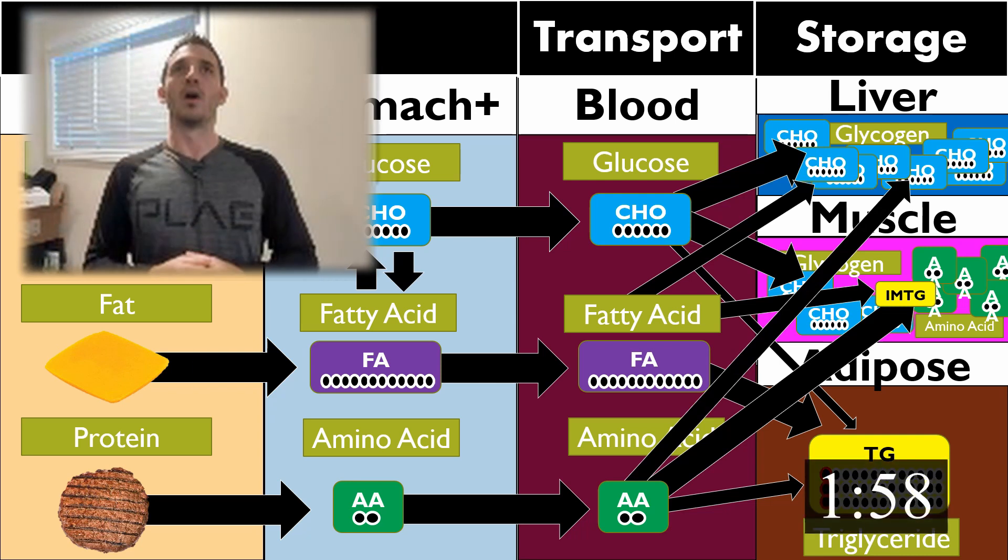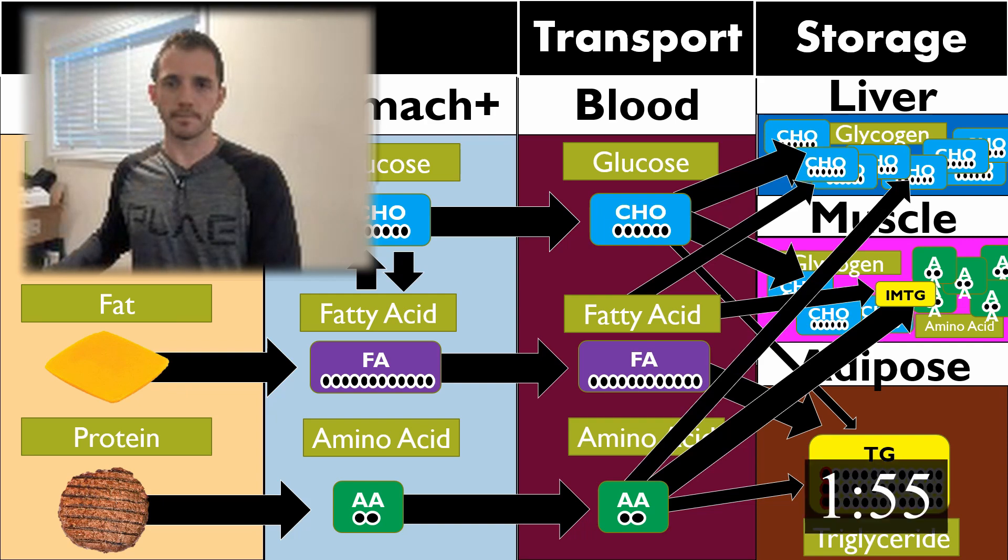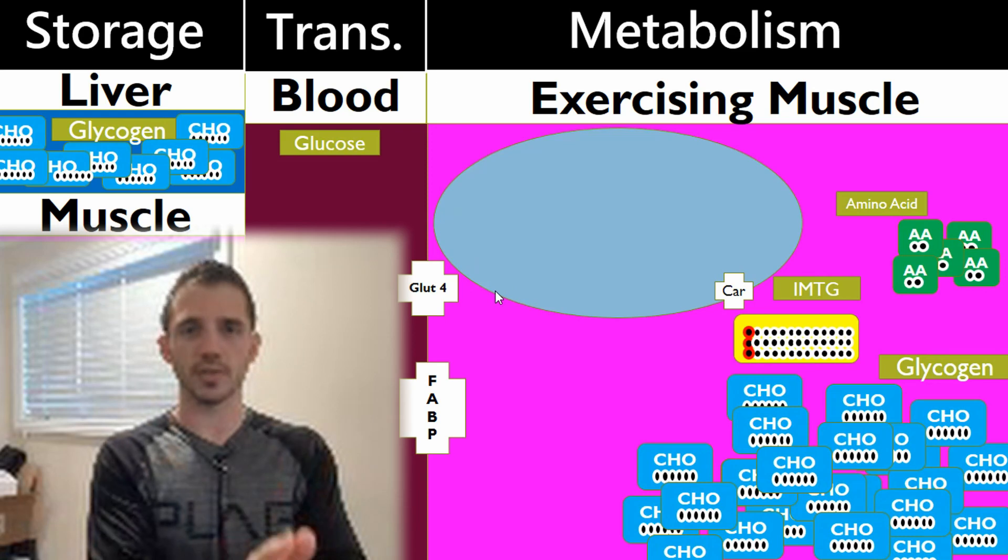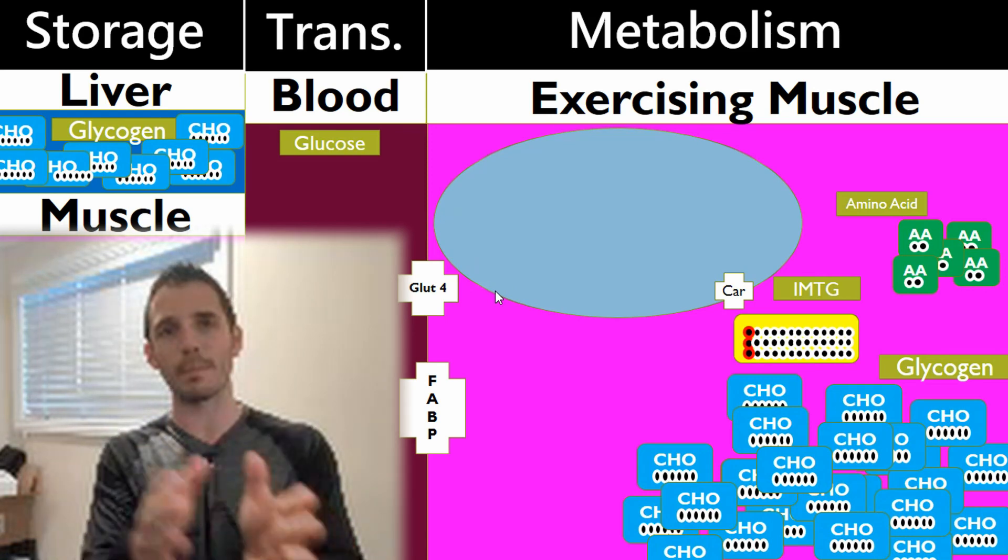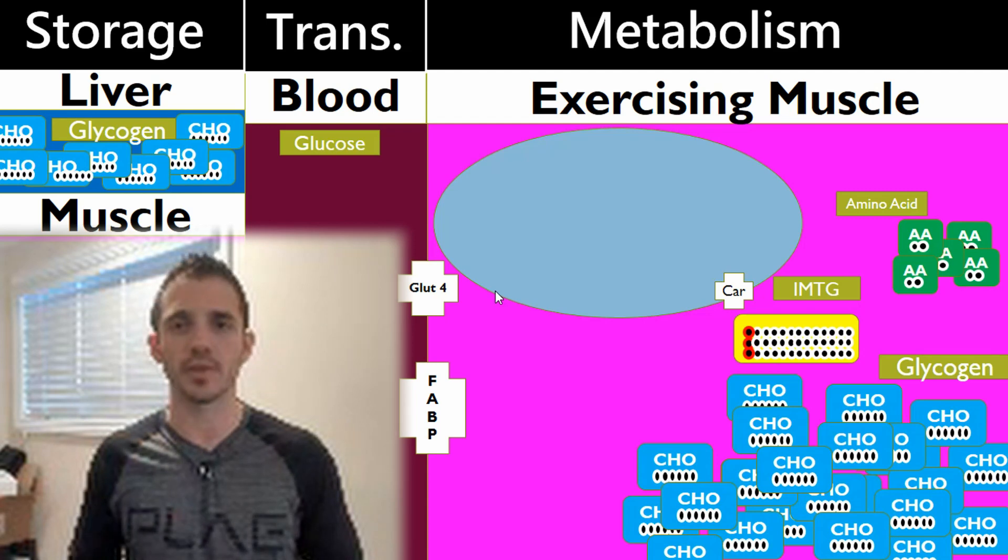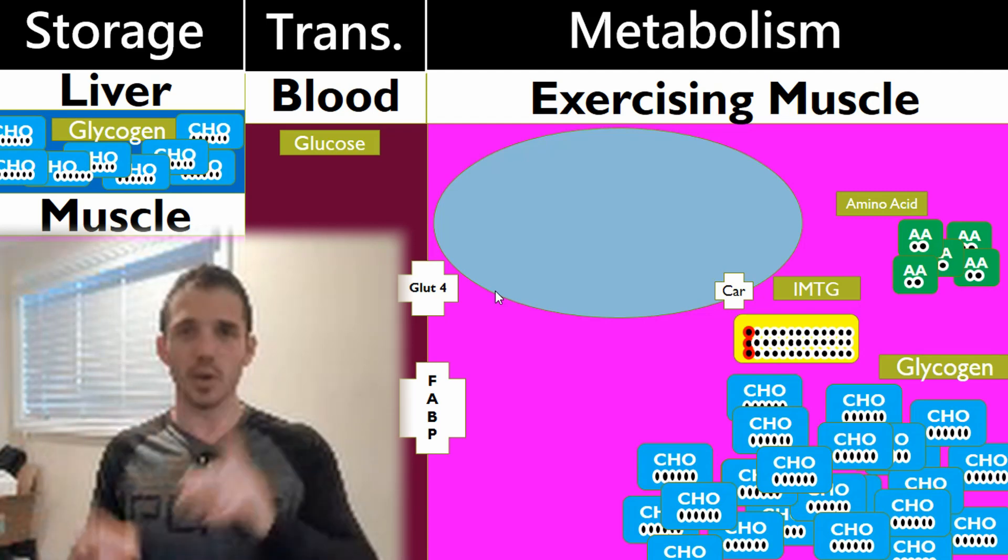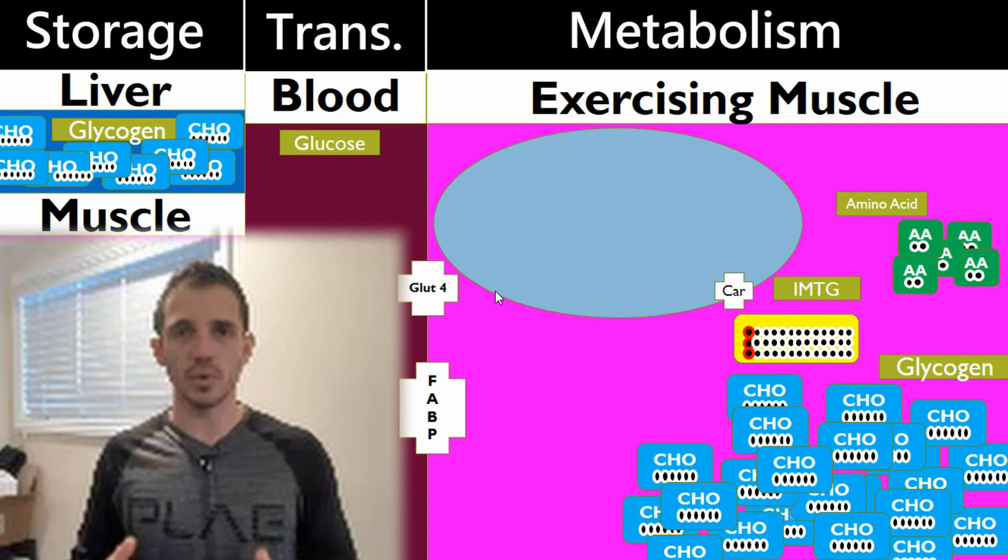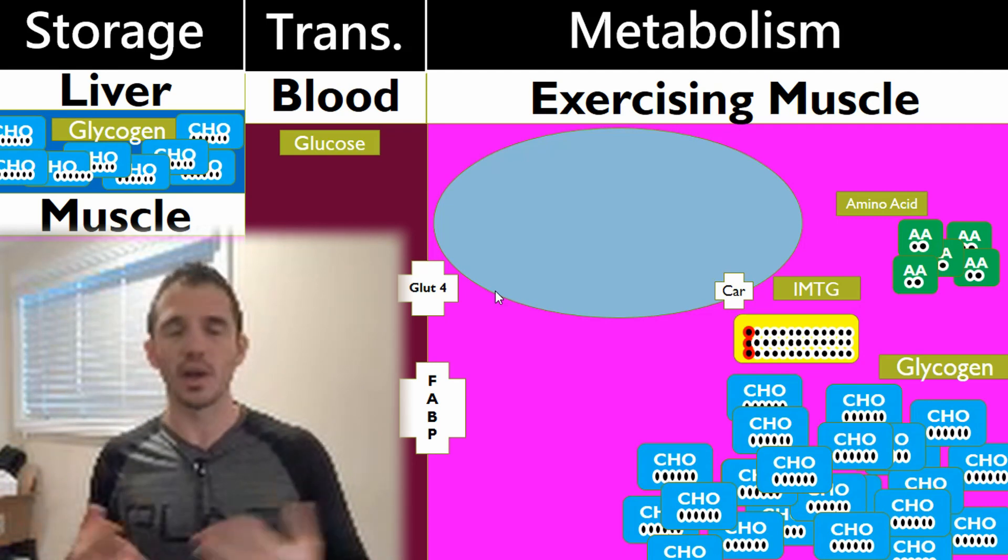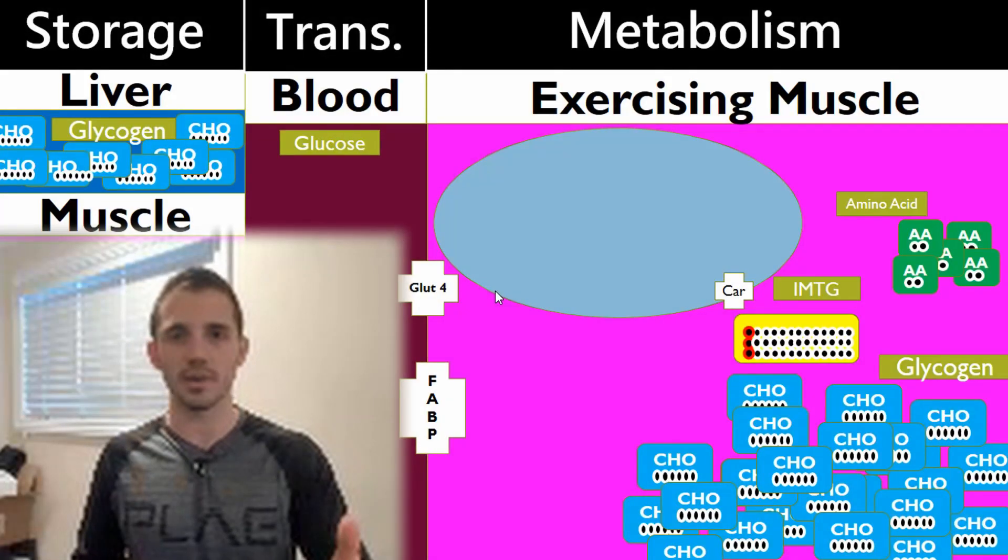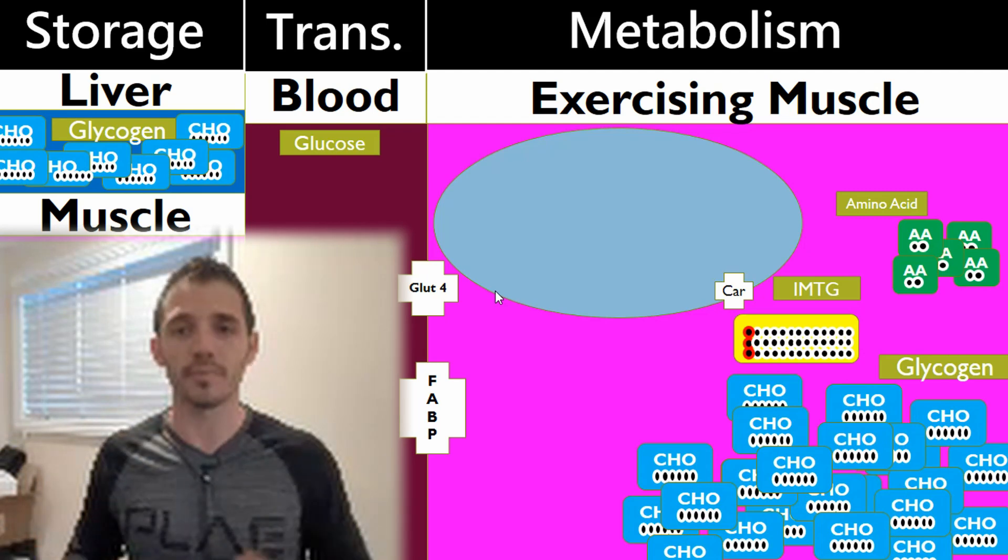Now we've got our stored energy systems. To get stored energy into the exercising muscle, we have to put it back in the blood and move it to whatever muscle is being exercised. When you exercise, you're primarily going to use the fuel that's in the exercising muscle. It makes more sense - it's right there, it's faster. If you start taking fuel from another organ or tissue, you have to pick it up in blood and move it, which is slower.